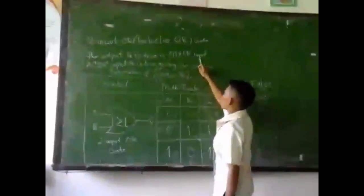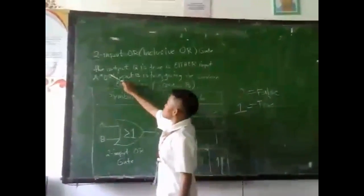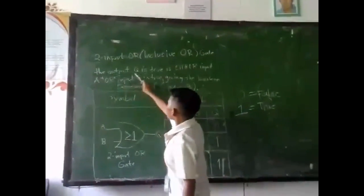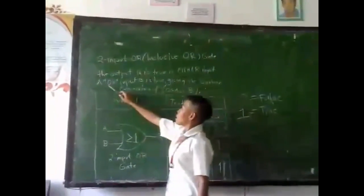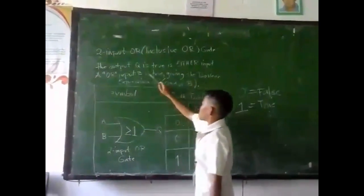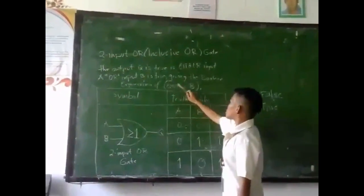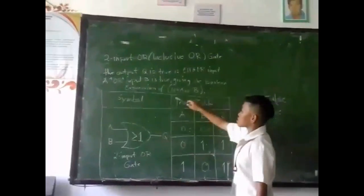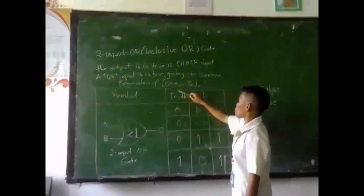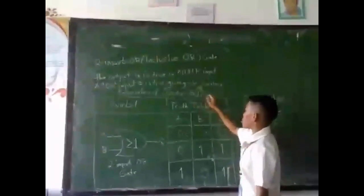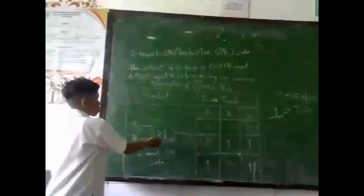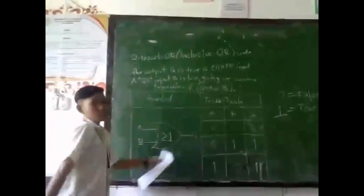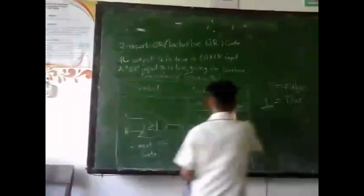Two input exclusive OR gate. The output U is true if either input A or input B is true, giving the boolean expression of U equals A XOR B. It has a symbol and truth table.